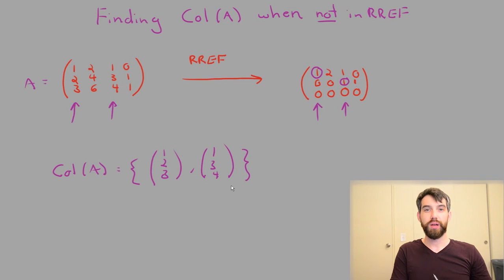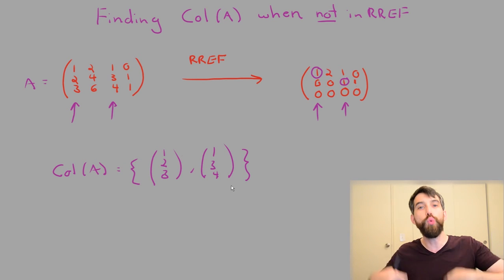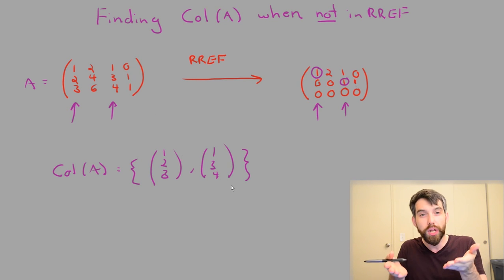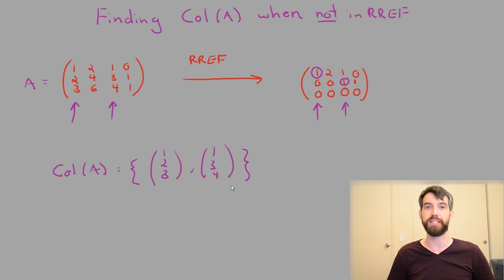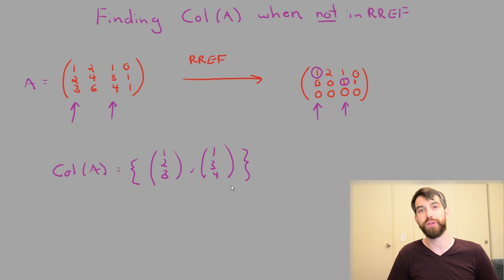In other words, to figure out the column space, you do row reduce it, and you do look at the RREF form and you say, where are the leading ones? But those columns of the RREF form are not the columns you use, they just tell you which columns to look at. They tell you, look at the first and third column in this case, but you go back to the original matrix A to actually look there, and you say, what is the first and third column of the original matrix A? And that will form the basis for your column space.